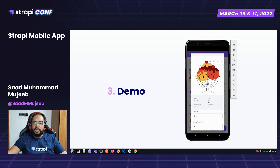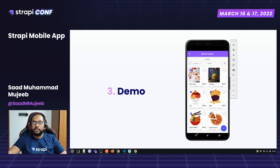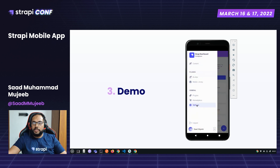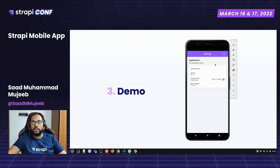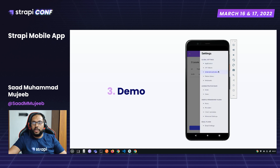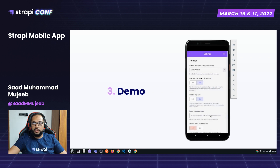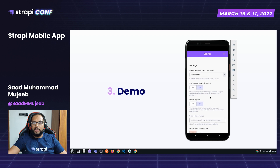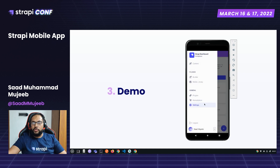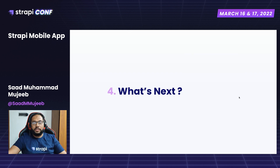Let me show the media library — we have all the media here. You can open any media item and check out its details. In the settings page, the basic settings show application information, just like on the web. In the secondary menu you have all the different settings sections: localization, application, administrative roles, user permission roles, and advanced settings — exactly like the web version with version 4 standards.